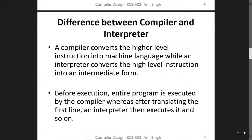Another difference: the compiler converts the high-level instruction into machine language, while the interpreter converts high-level instructions into an intermediate form. The interpreter converts directly into intermediate form — it doesn't create an object file beforehand.